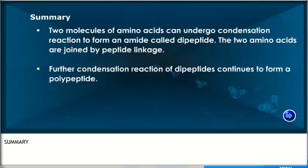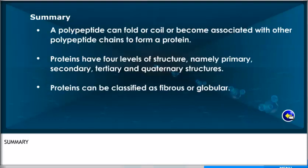Summary. Two molecules of amino acids can undergo condensation reaction to form an amide called dipeptide. The two amino acids are joined by peptide linkage. Further condensation reaction of dipeptides continues to form a polypeptide. A polypeptide can fold or coil or become associated with other polypeptide chains to form a protein. Proteins have four levels of structure: primary, secondary, tertiary, and quaternary structures. Proteins can be classified as fibrous or globular.